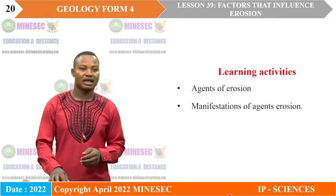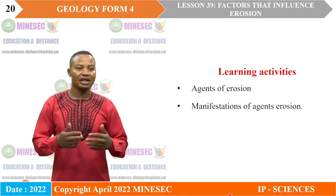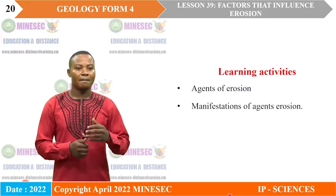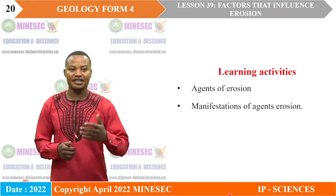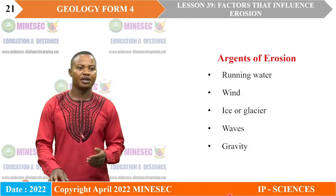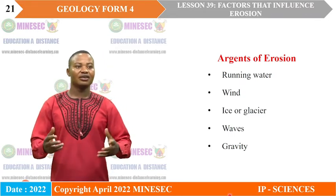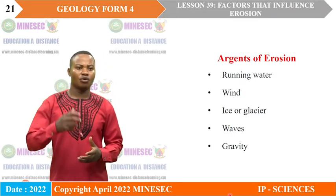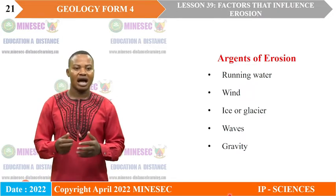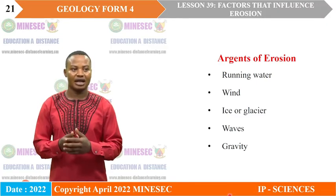We will answer that at the end of our lesson. For learning activities, we are going to look at agents of erosion and their manifestations. Agents of erosion can be grouped into: running water, wind, ice or glacier, waves, and gravity.